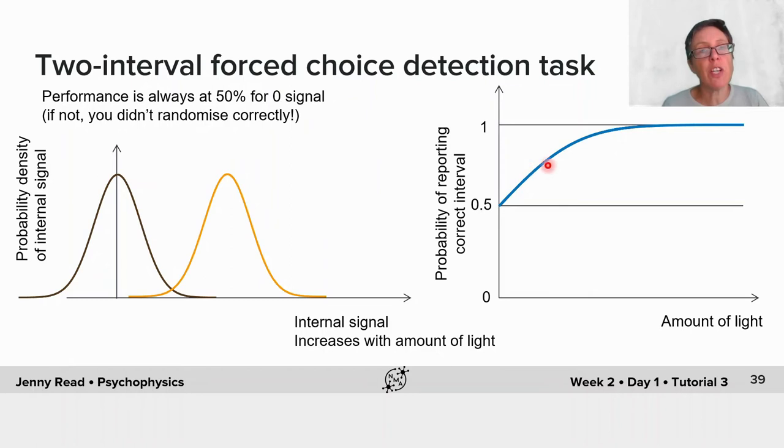The great advantage here is that the performance is always at 50% for zero signal. It has to be. If it isn't, then that means you didn't do your randomisation correctly. And it approaches one as you increase the stimulus intensity.